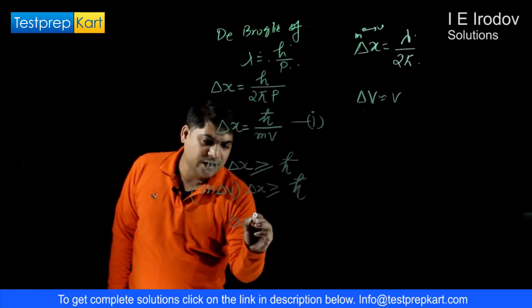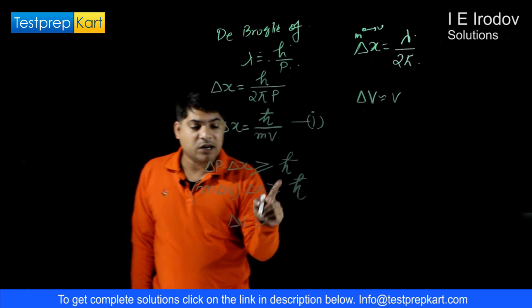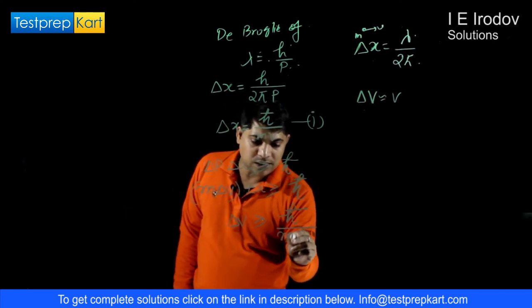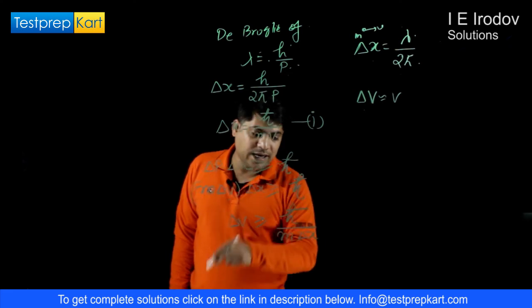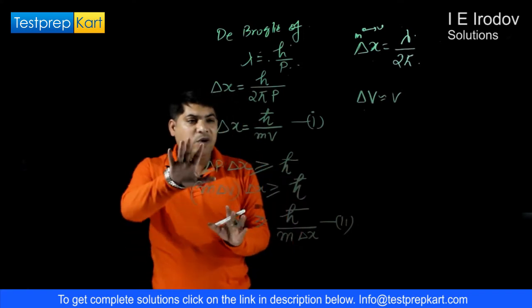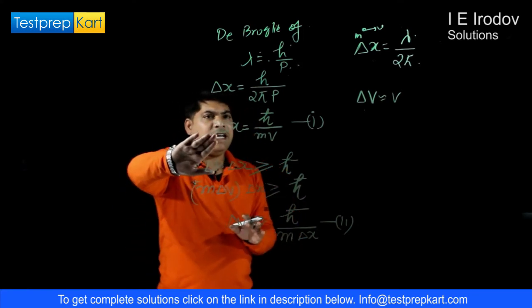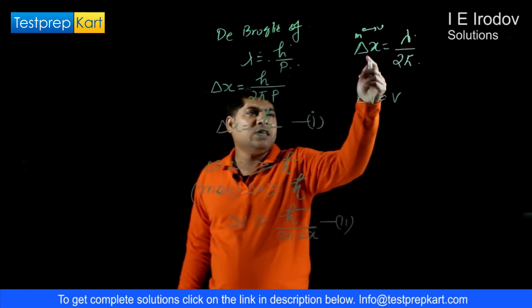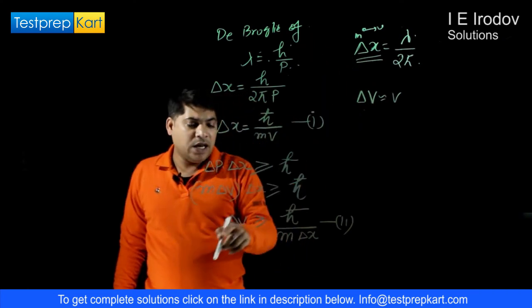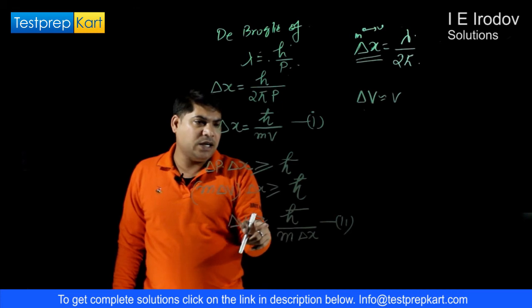So from there we can write delta v uncertainty in velocity must be greater or equals to h bar over mass into delta x. This is our equation 2. Now, we will closely look at equation 1 and equation 2. Equation 1 we are getting from the given condition for uncertainty of position and de Broglie equation, equation 2 we are getting from Heisenberg's uncertainty principle.